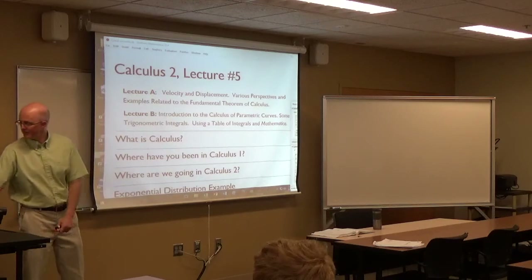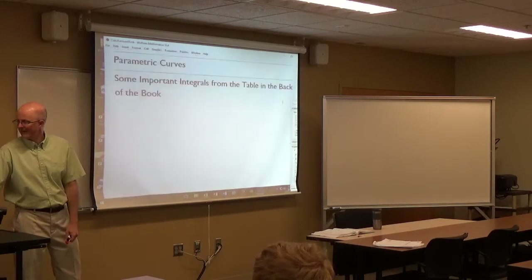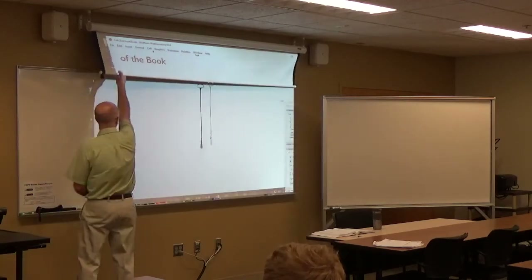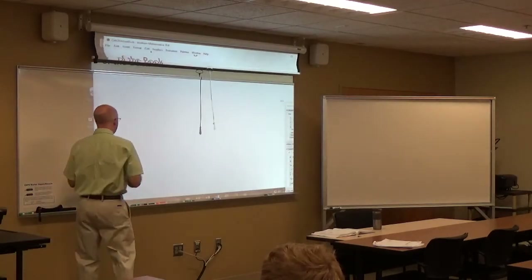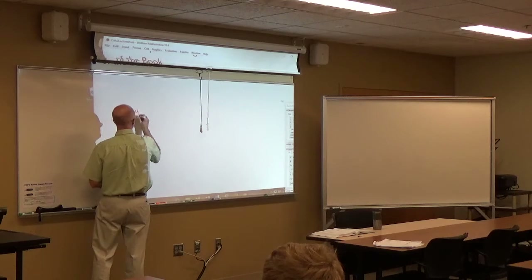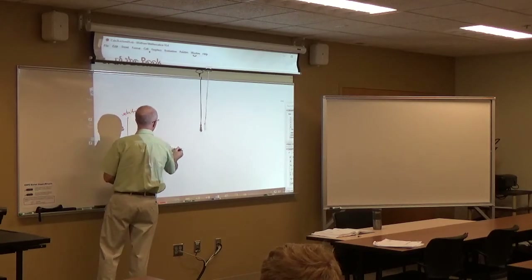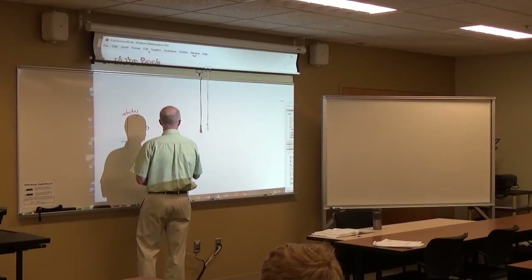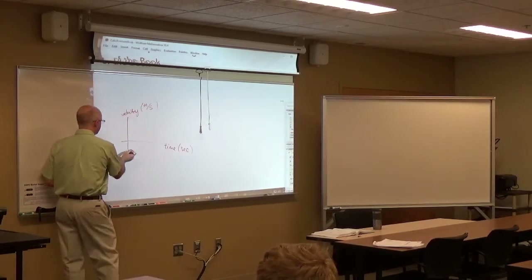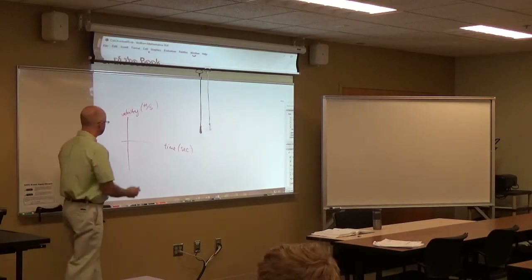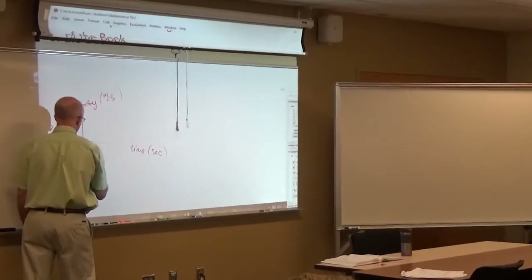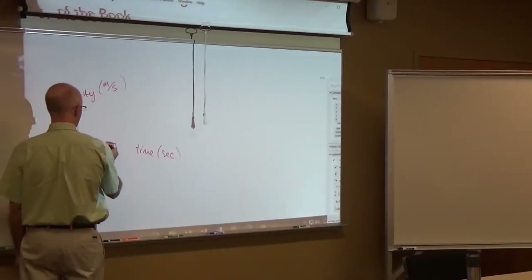So let's start with that example we were looking at at the end of class last time, where I had a velocity function. This axis was velocity, and this axis was time. I'll take time to be in the standard units of seconds and velocity in meters per second. The graph I made was a piecewise function — actually piecewise linear. I took it to be negative 2 when t was from 0 to 4.